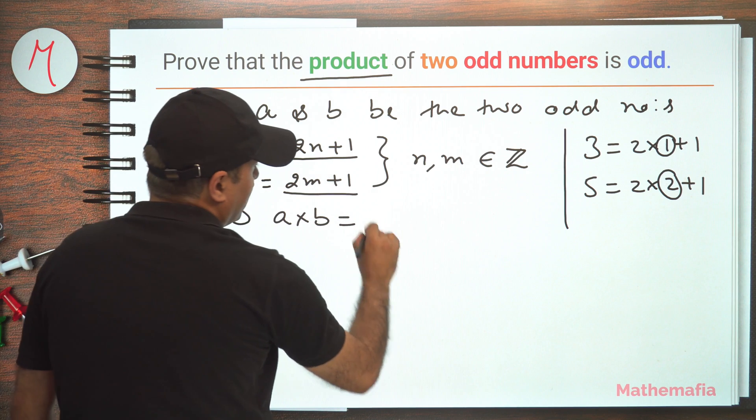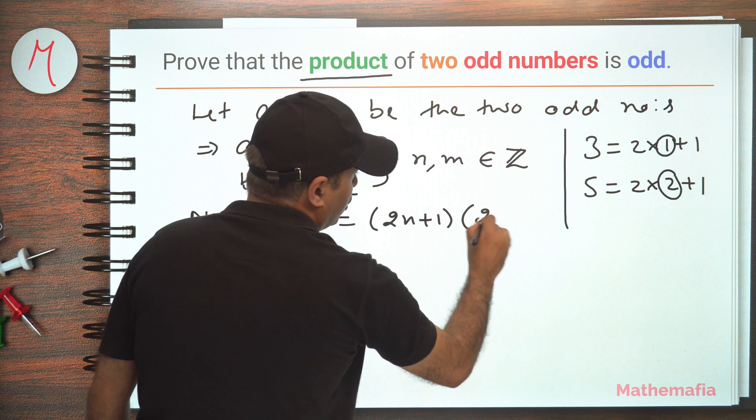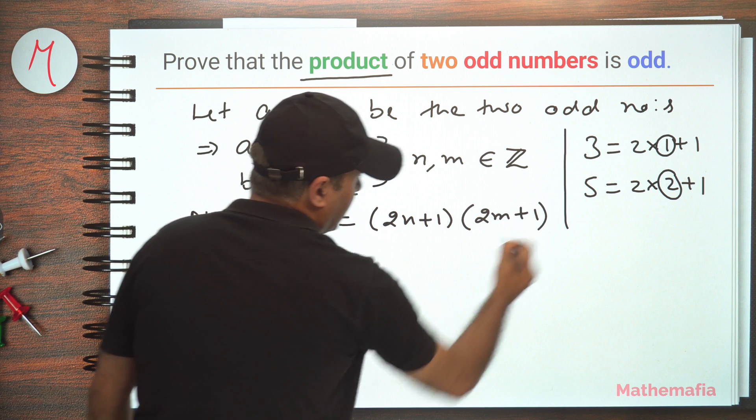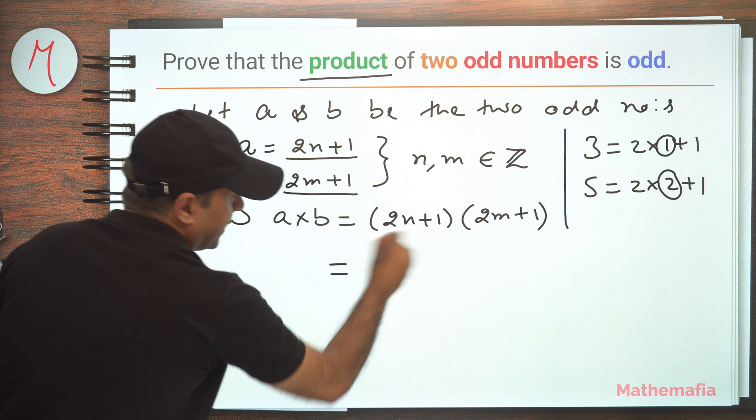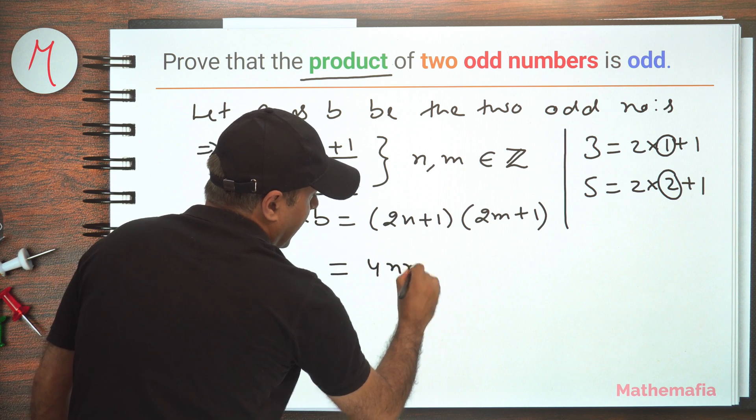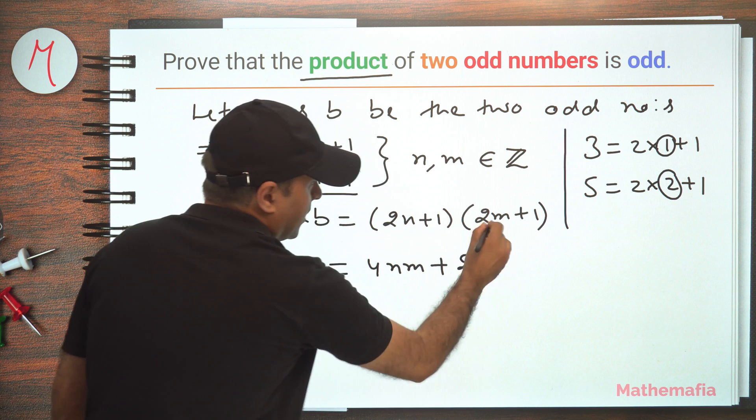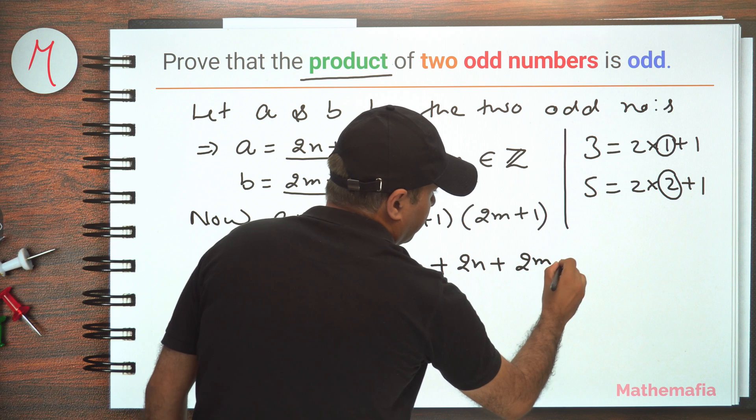So it will be 2n plus 1 multiplied by 2m plus 1, and this will become - let's multiply it. So it will be 4nm plus 2n plus 2m plus 1.